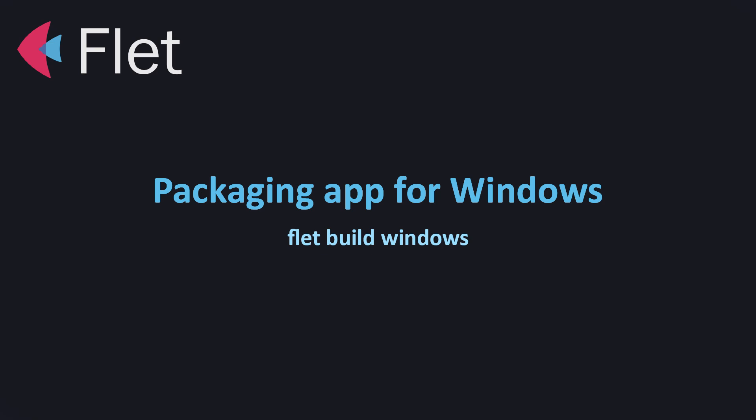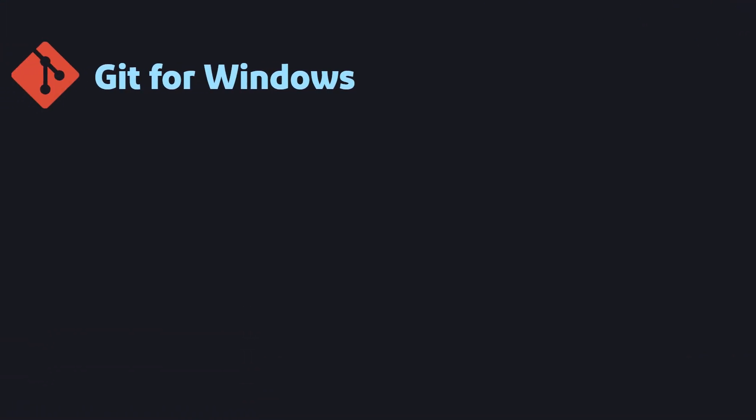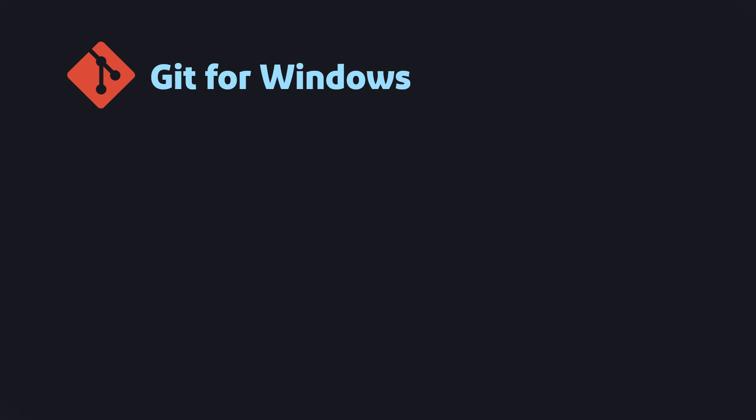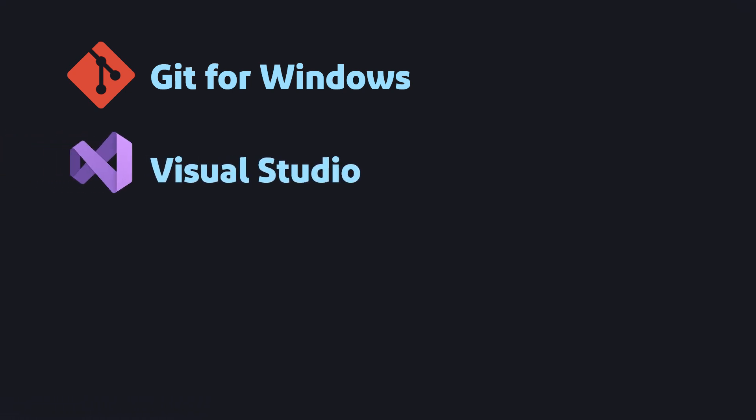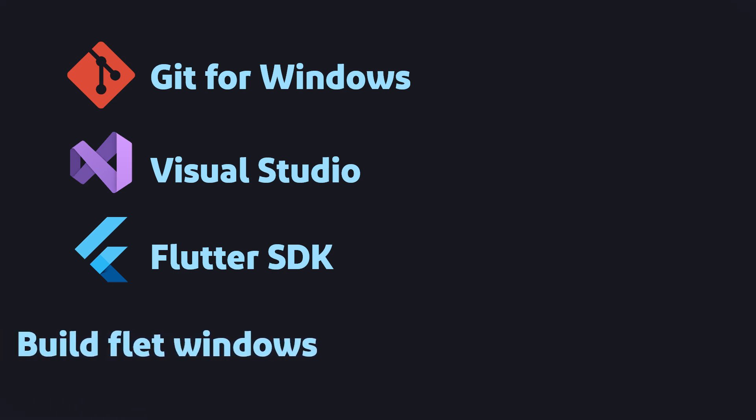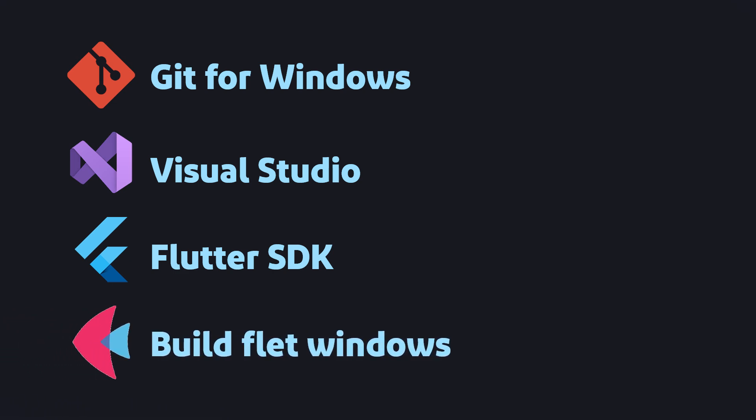Hey guys, in this video I'm going to teach you how to package your flit app for Windows. The way we're going through this video is: first install Git for Windows, then install Visual Studio, then Flutter SDK, and finally build our app for Windows. If you have Git or Visual Studio already installed you can skip those parts, but I really recommend watching the whole video.